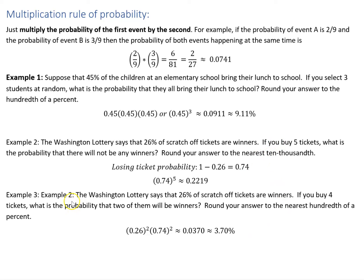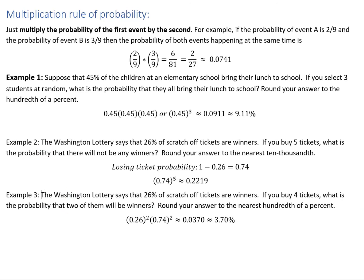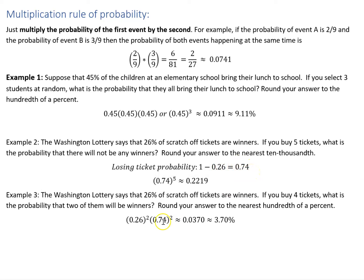Example three is from example two but just a different scenario: the Washington Lottery says that 26% of scratch-off tickets are winners. You buy four tickets — what's the probability that two of them will be winners? So again, we know that winners are 0.26 and losers are 0.74.